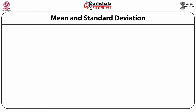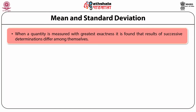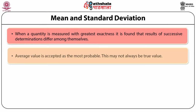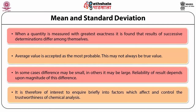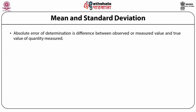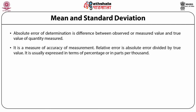Mean and standard deviation: When a quantity is measured with the greatest exactness of which the instrument, method, and observer are capable, successive determinations differ among themselves. The average value is accepted as the most probable, though it may not always be the true value. The reliability of results depends upon the magnitude of this difference. The absolute error of a determination is the difference between the observed value and the true value and is a measure of accuracy. The relative error is the absolute error divided by the true value, usually expressed as a percentage or in parts per thousand.